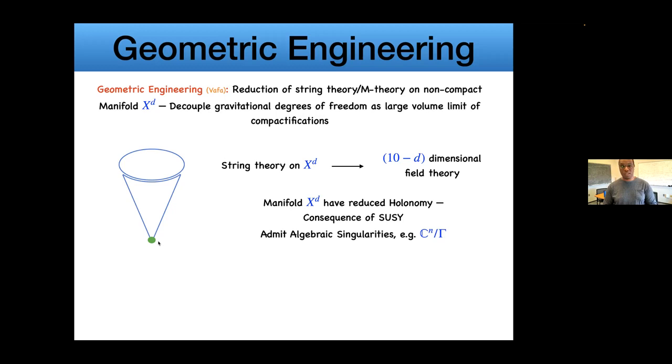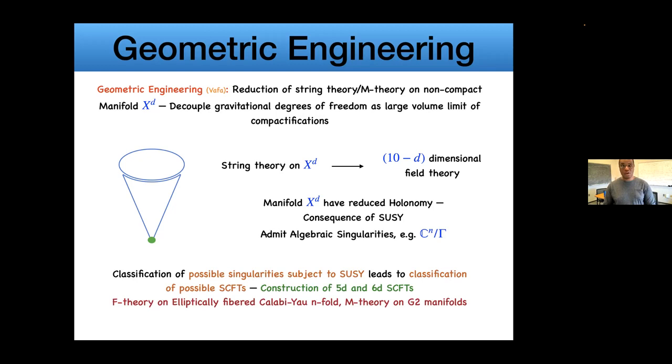At the tip of the cone, there's usually some singularity that exists, and the leftover degrees of freedom when you reduce string theory in such a background are the degrees of freedom stuck on such a singularity. They're described by some quantum field theory. The manifold X_d usually has some reduced holonomy, which is a consequence of SUSY and a very powerful constraint. From this point of view, you can make a well-defined classification program by asking what are the possible singularities that can exist subject to this constraint.